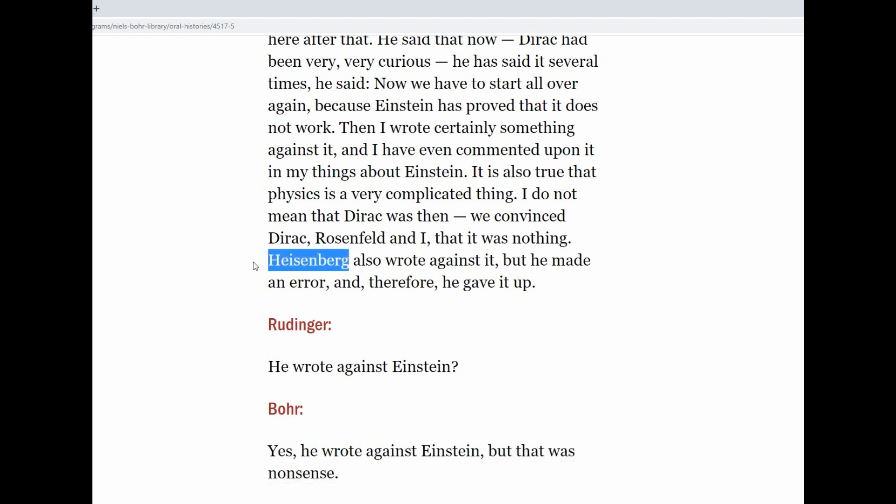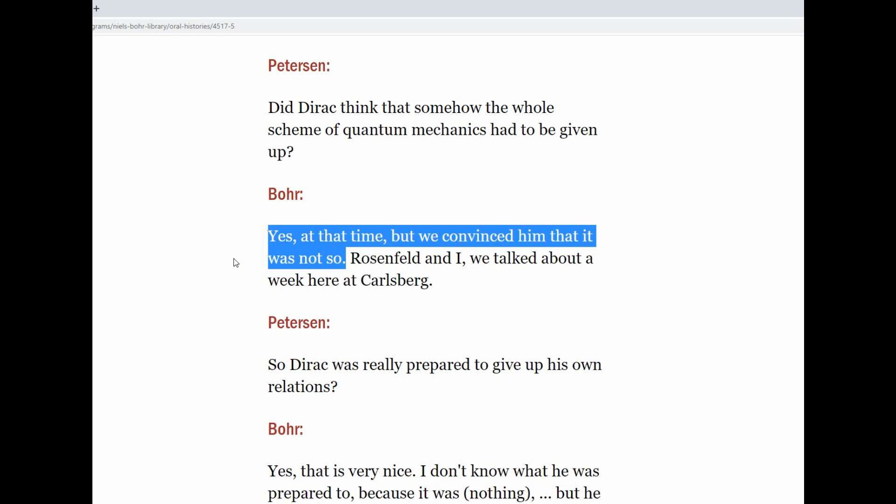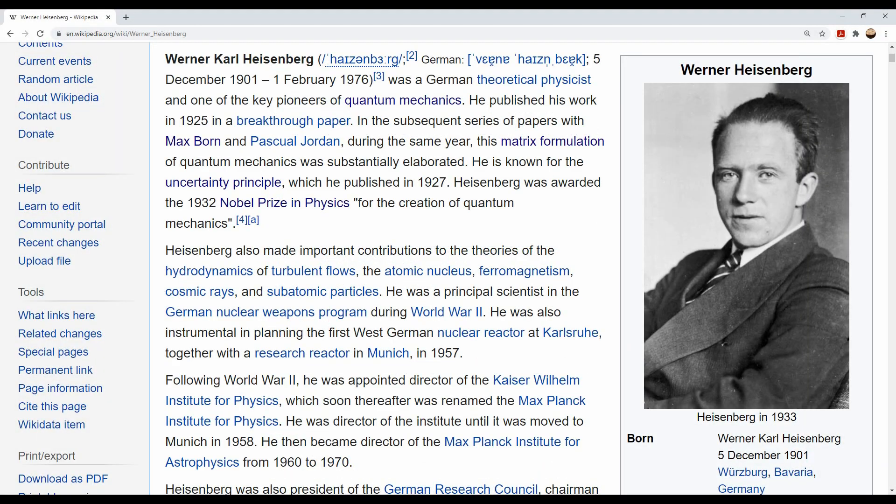And remember that Heisenberg wrote the uncertainty principle paper that is being directly invalidated by the EPR paper. And again, the question was asked, 'Did Dirac think he had to give up quantum mechanics?' Then Bohr replied, 'Yes, at that time, but they had to convince him otherwise.'